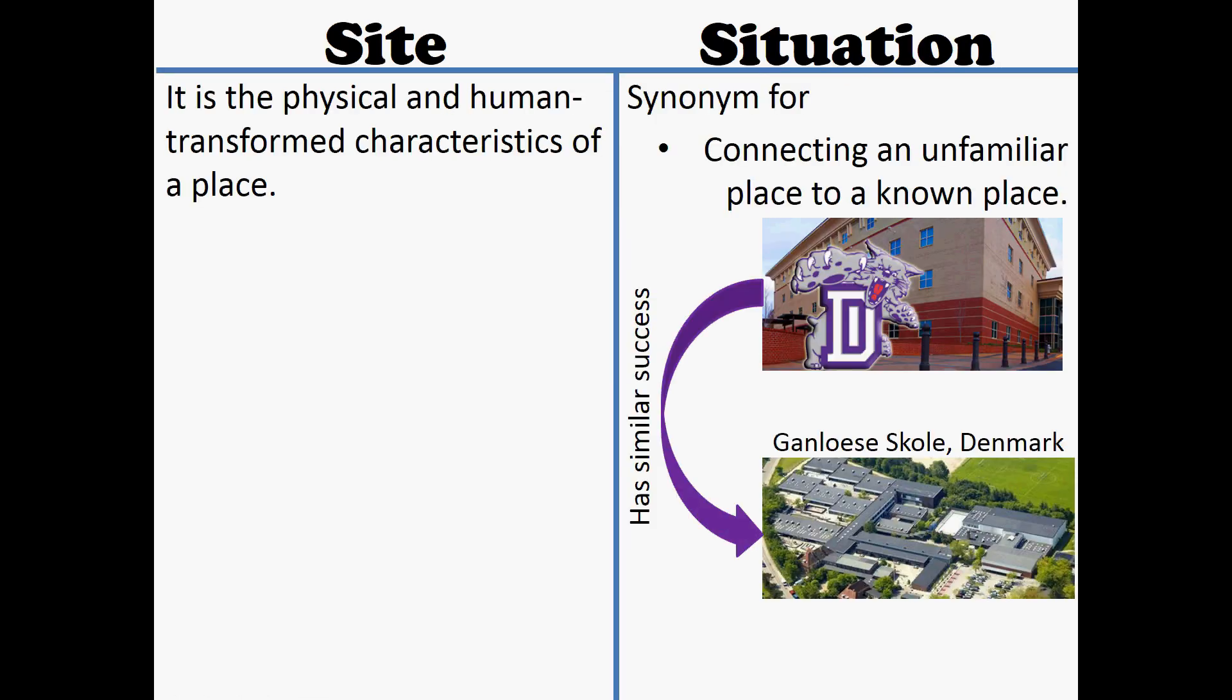Two other terms we'll be using are site and situation. We'll start left to right. Site is basically what have humans done to an area, and what is it actually like in this area. Sometimes it's known as absolute location, but it means what is the climate, the topography, the water sources, the vegetation. You literally want to know what is it like there, exactly like, what does it look like. You can see the land, the creeks, the ponds, roads.